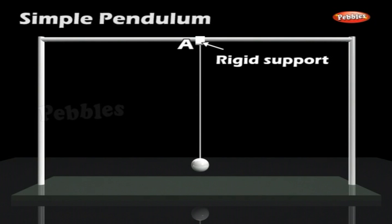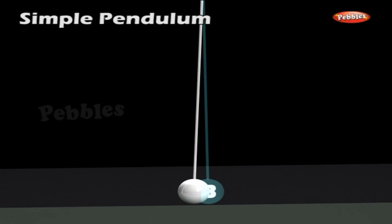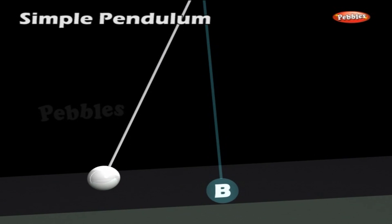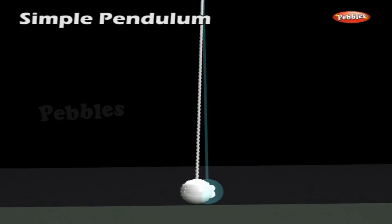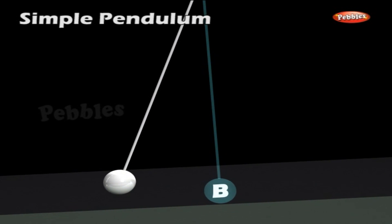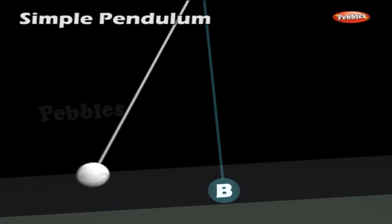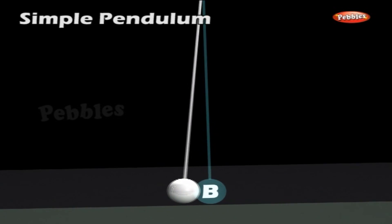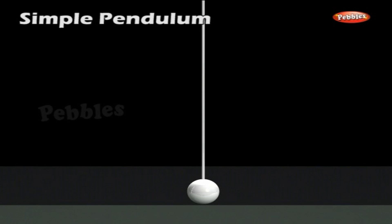A rigid support A is that which does not yield under the weight of the bob. The point B where the bob starts oscillating and also finally comes to rest is called the mean position of the simple pendulum.